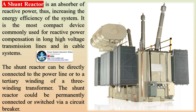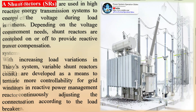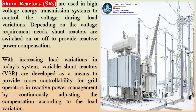The shunt reactor could be permanently connected or switched via a circuit breaker. Shunt reactors are used in high-voltage energy transmission systems to control the voltage during load variations. Depending on the voltage requirement needs, shunt reactors are switched on or off to provide reactive power compensation.